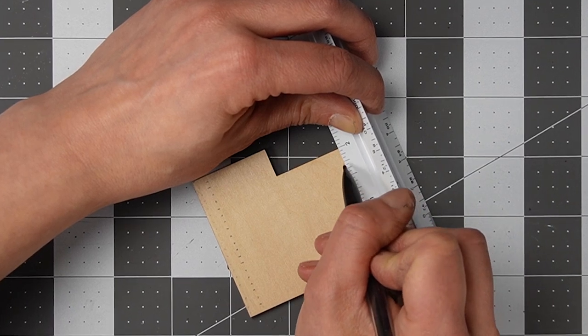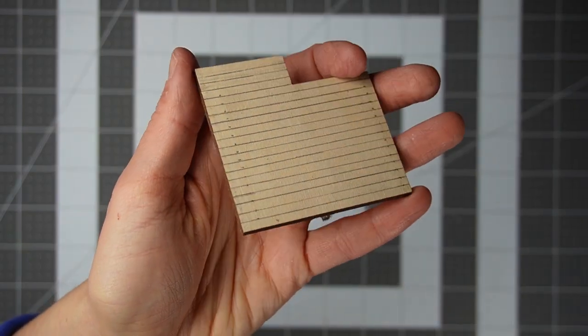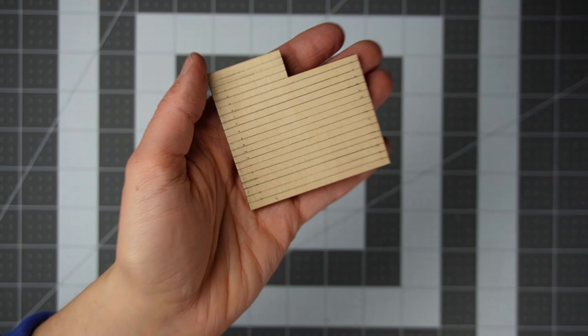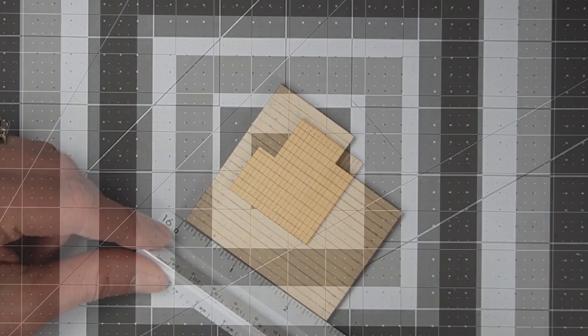Once I make my dots I make some more on the other side and then I connect these lines and these are my horizontal running boards for my floor.